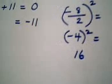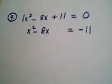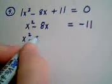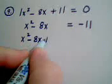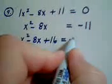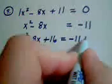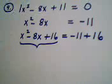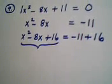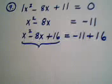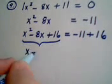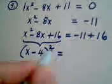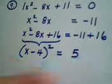And 16 here is the magic number that we use to add to both sides of this equation. So we have x squared minus 8x plus 16 is equal to negative 11 plus 16. The left-hand side is now a perfect square, which is the whole idea. This is why this is called completing the square. And it factors as x minus 4 quantity squared equals, when we combine like terms, we have the number 5.